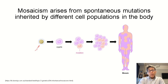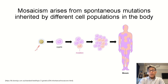Mosaicism arises from spontaneous mutations that are inherited by different cell populations in the body. After the sperm and egg meet, a single-cell zygote is created that divides subsequently, and a mutation occurring early in embryogenesis — like at the four-cell stage seen here in red — will be inherited by all the daughter cells and spread to many parts of the body. The person will be mosaic for the two types of cells.